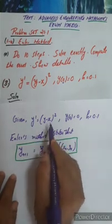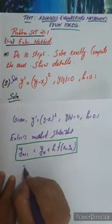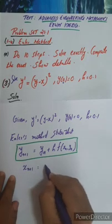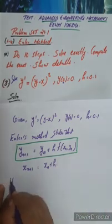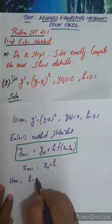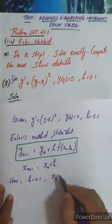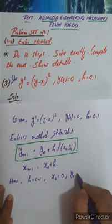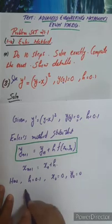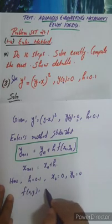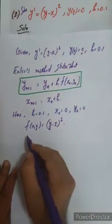We have to solve this question. Here, x_{n+1} = x_n + h. Given h = 0.1, and from the initial condition y(0) = 0, we have x₀ = 0 and y₀ = 0. Also, f(x, y) = (y - x)².